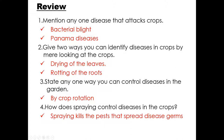Another question: give two ways you can identify diseases in crops by mere looking at the crops. How can you identify them? We discussed and said: drying of the leaves, rotting of the roots, and we can also talk about wilting. If a plant wilts or the leaves turn yellow, those are some of the signs you can tell by mere looking at the crop.